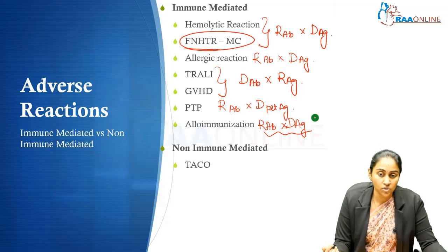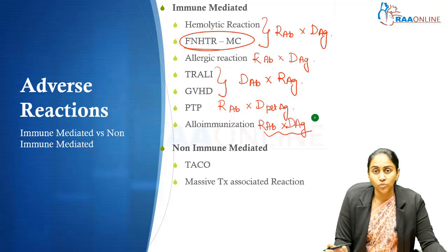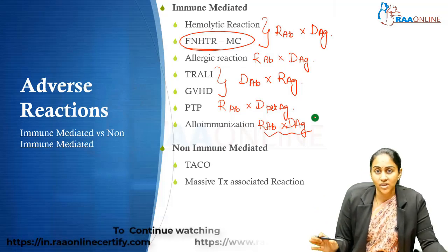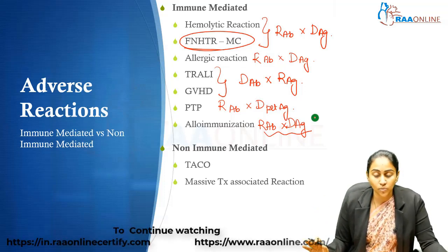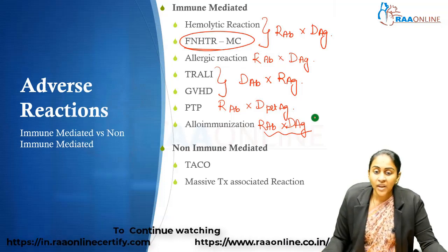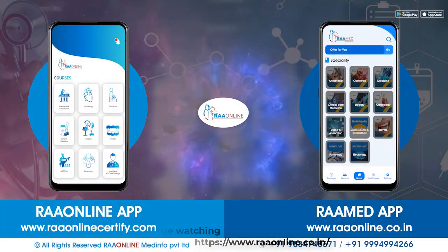You have TACO — transfusion associated circulatory overload — which is non-immune mediated. It happens because of volume overload; it is basically a volume overload state as a result of transfusion. Then you have massive transfusion associated reactions.